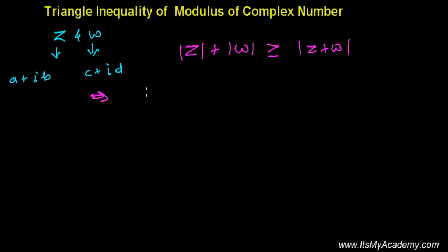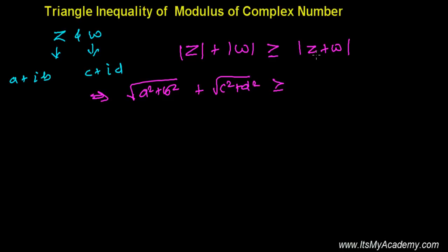Here we have |z| equals √(a² + b²) and |w| equals √(c² + d²), and this is greater than or equal to |z + w|. Now z + w gives (a + c) + i(b + d), so we need to find the absolute value of that.